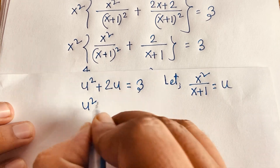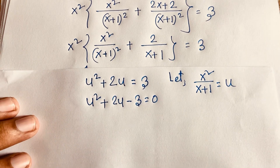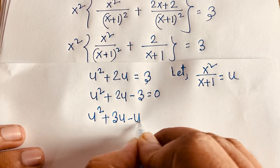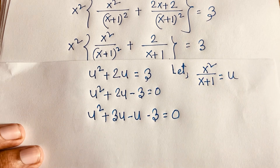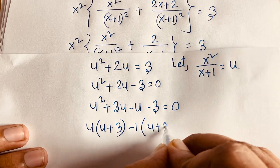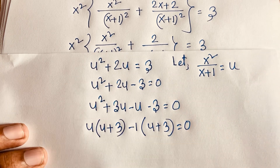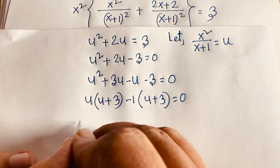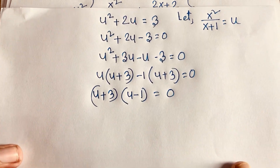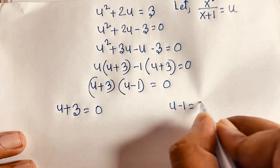Rearranging: u squared plus 2u minus 3 equals 0. Using middle-term factoring, this becomes (u + 3)(u - 1) = 0. So u + 3 = 0 or u - 1 = 0, giving two cases.